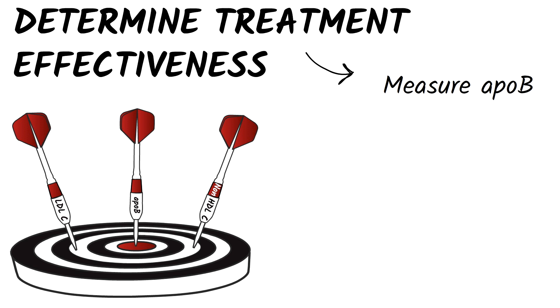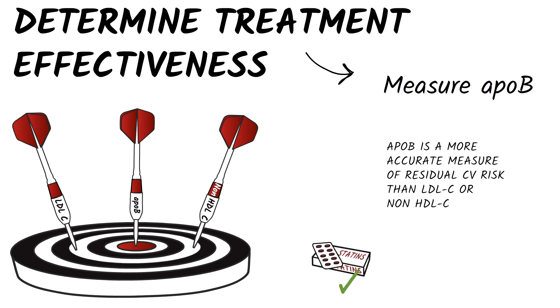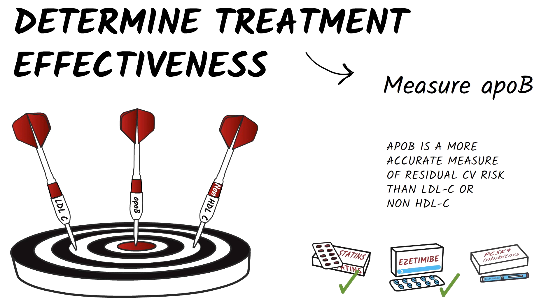And because randomized clinical trials have shown that ApoB is a more accurate measure of residual cardiovascular risk than LDL-C or non-HDL-C. This has been shown for statin treatment, for statin plus ezetimibe treatment, and for combined statin plus PCSK9 inhibitor treatment.